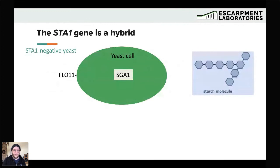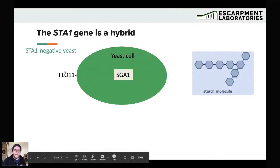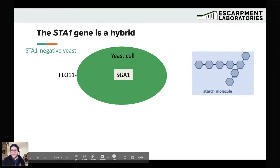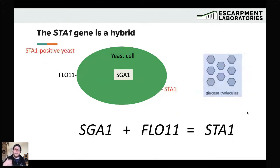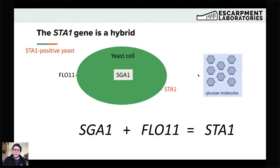Just to illustrate that: in a normal yeast, FLO11 sits on the outside and SGA1 is on the inside for breaking down carbohydrates during sporulation. With starch molecules out in the beer, an STA1-negative yeast is not going to touch those starch molecules — final gravity should be relatively stable. But when we have that STA1-positive yeast with the hybrid SGA1+FLO11 fusion, that starch can be broken down into glucose, causing a secondary fermentation. That's where a lot of these problems come from.